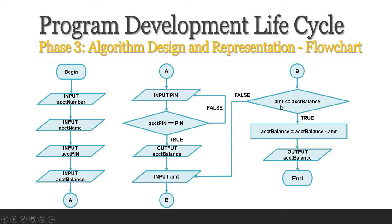The program should allow the user to input the amount to be withdrawn. The program should check whether the amount is less than or equal to the account balance, because you cannot withdraw an amount larger than the account balance. If false, you go back to input amount. If true, there would be a process of deducting the original account balance less the amount to be withdrawn, giving the new value of the account balance. Once done, the program should display the account balance. So that ends the flowchart.